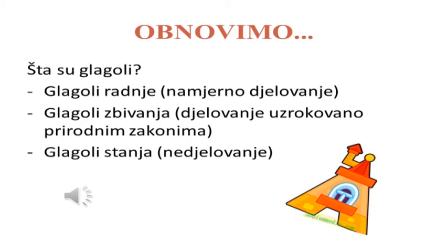Sagraditi. Glagoli zbivanja ili djelovanje uzrokovano prirodnim zakonima su glagoli zbivanja. Izražavaju događaje uzrokovane prirodnim silama. Na primjer: narasti, ostarjeti, naoblačiti se, truhnuti, vehnuti, puhati, rasti.